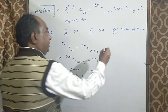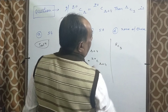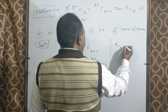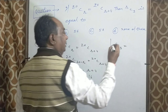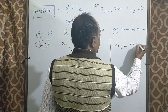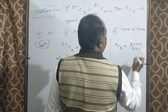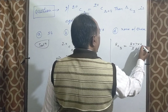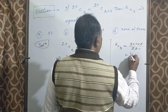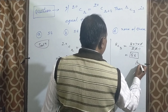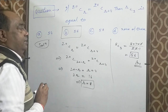R की value 8 मिली, तो यहां put करते हैं: 8C3 की value निकालनी होगी। Short trick method से: 8 into 7 into 6 upon 3 factorial, यानि 3×2×1 से 6 cancel होगा, 8 की 7 से multiply करने पर 56। तो question का answer 56 है, यानि B option correct है।